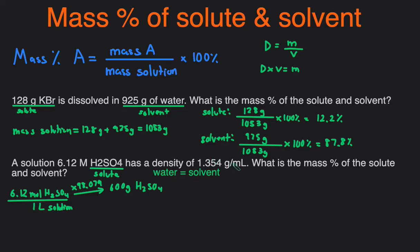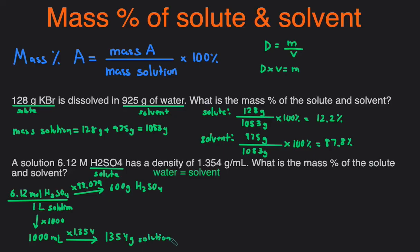The density is in grams per milliliter, so we need to convert our volume from liters to milliliters — multiplying by 1000 gives us 1000 milliliters of solution. Each milliliter weighs 1.354 grams, so we multiply 1000 milliliters by 1.354 grams per milliliter, giving us 1354 grams of the solution. Now, the mass of the solvent is the difference between the two: 1354 minus 600 grams gives us 754 grams of the solvent, which is H₂O.